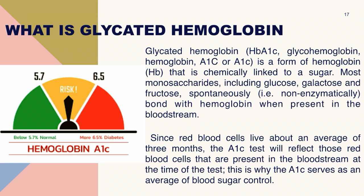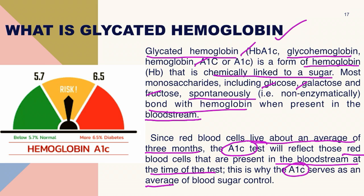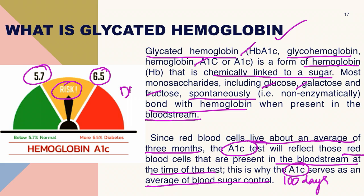Glycated hemoglobin — also called glycohemoglobin, glycosylated hemoglobin, HbA1c, or simply A1c — is a form of hemoglobin chemically linked to sugar. Monosaccharides including glucose, galactose, and fructose spontaneously bond with hemoglobin when present in the bloodstream. Since red blood cells live for about 3 months, the A1c test reflects average blood sugar for the recent 100 days. Normal A1c is less than 5.7%; 5.7–6.5% indicates pre-diabetes; above 6.5% is diabetes mellitus.